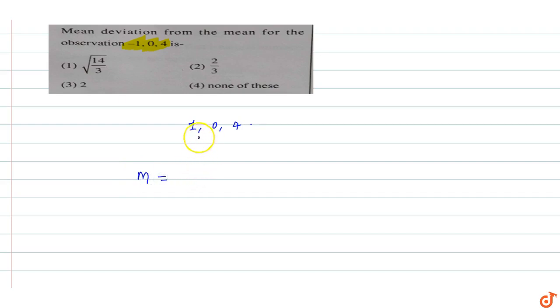Sum of the numbers which equals -1 + 0 + 4 upon total number of observations which is 3. So which is equal to 3/3 equals to 1. The mean is 1.